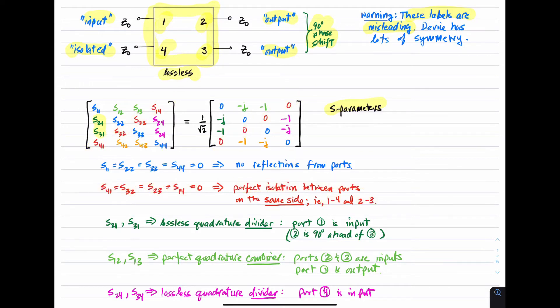S21 and S31 here are non-zero. S21 and S31 describe how this behaves as a quadrature divider, because S21 and S31 are describing the responses of ports two and three with respect to port one. So for these S-parameters, port one is the input and ports two and three are the output. So this is the behavior as a divider. And we see here that the magnitude is the same, we just have a 90-degree phase shift. Specifically, we see that port two is 90 degrees ahead of port three.